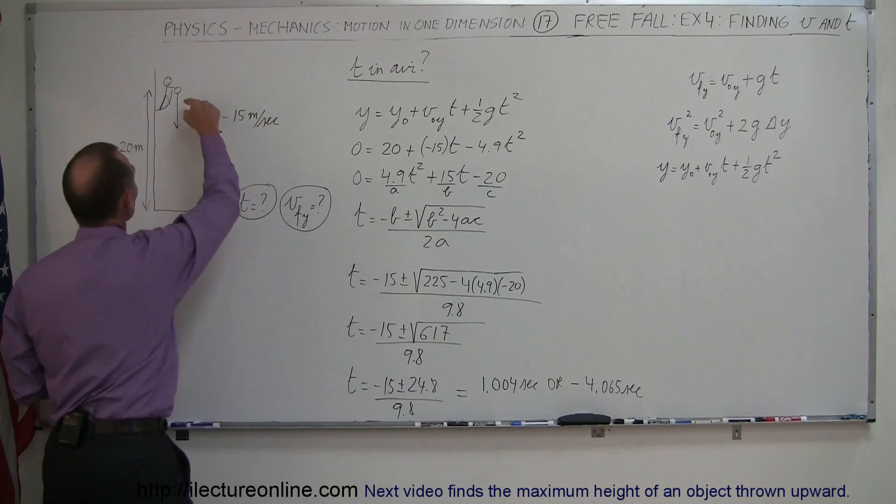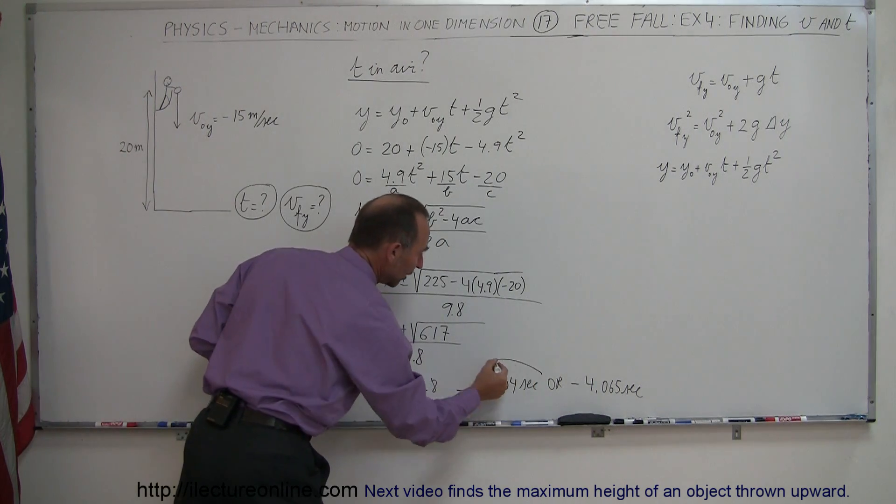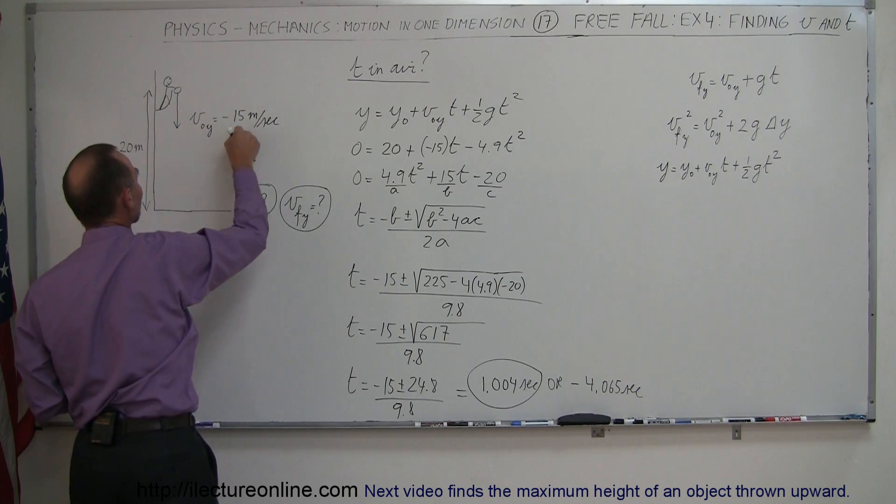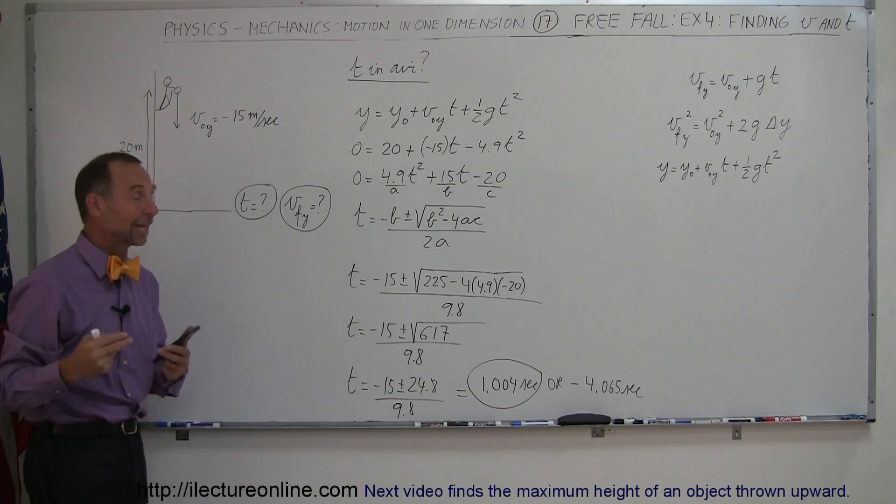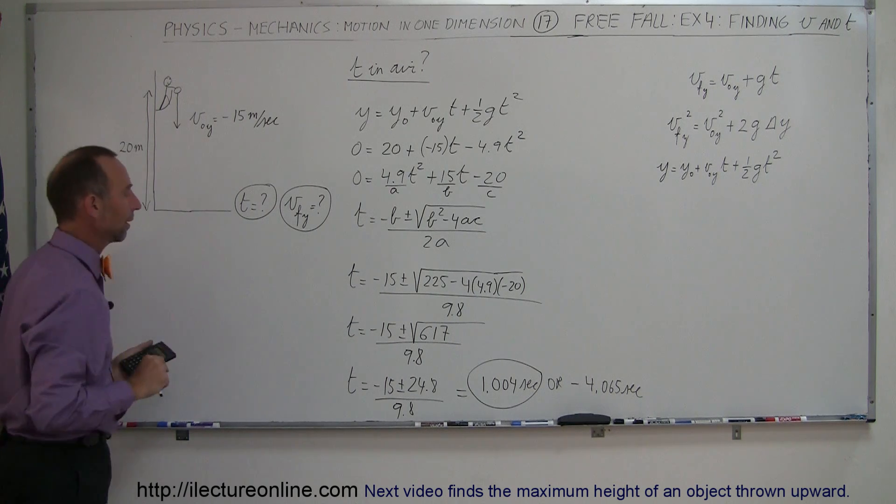be the 1.004 seconds from there to hitting the ground, so our answer would then be, this is how long it takes to go from this situation at a height of 20 meters, throwing something down at 15 meters per second, therefore negative 15 meters per second, it would take 1.004 seconds before it hits the ground. Now,